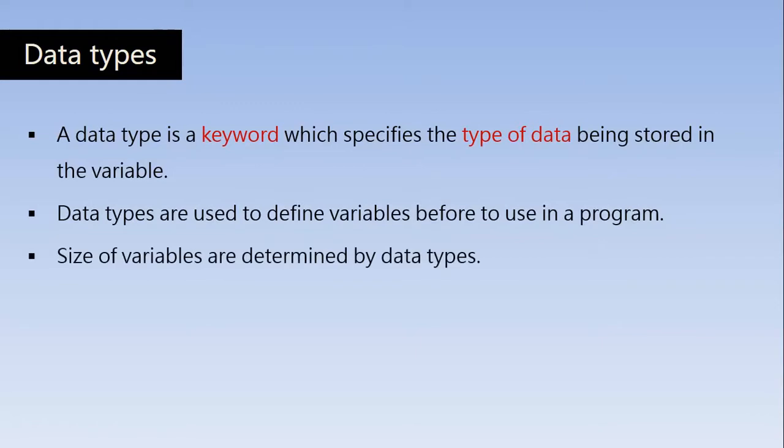The size of variables is determined by data types. There are situations where we store different kinds of data — characters, integers, and floating-point real numbers. Data types are used to find out the size of variables for the compiler. By looking at the data types, the compiler will find out the size of the variables that it is going to allocate.